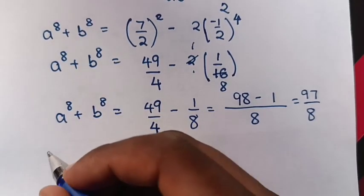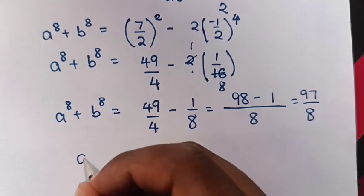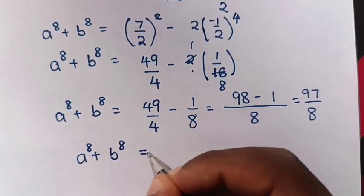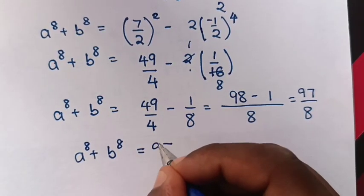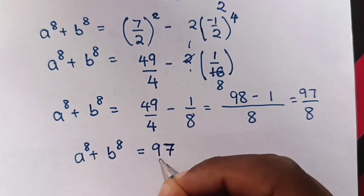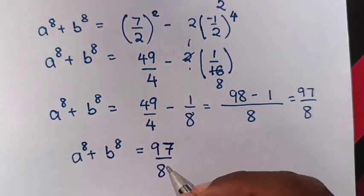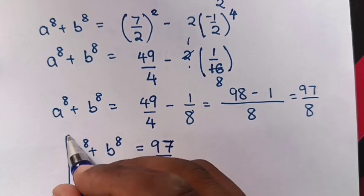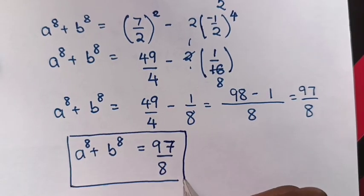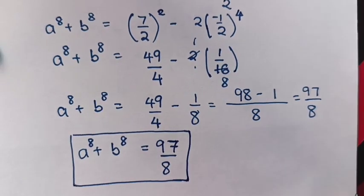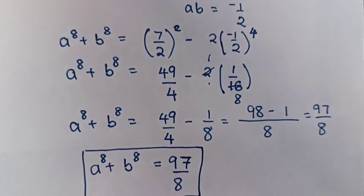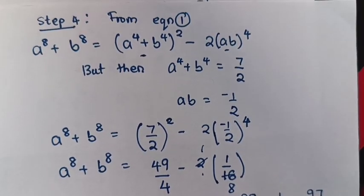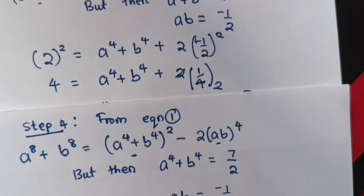Therefore, the value of a power 8 plus b power 8 is equal to 97 over 8. This is the final value of our question. Don't forget these steps. Subscribe to my channel and see you in the next video. Bye-bye, thank you.